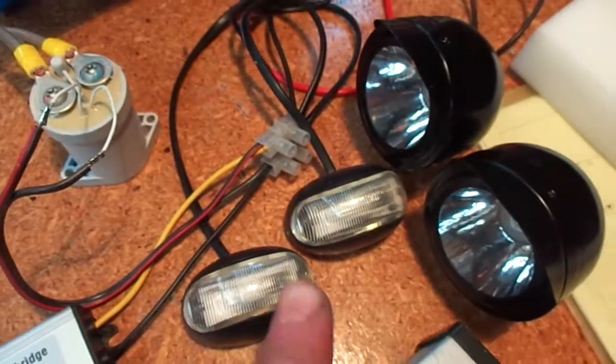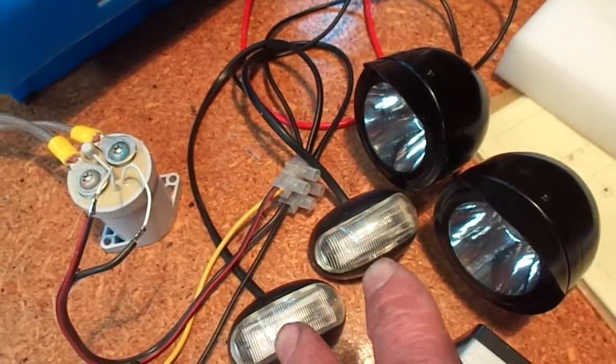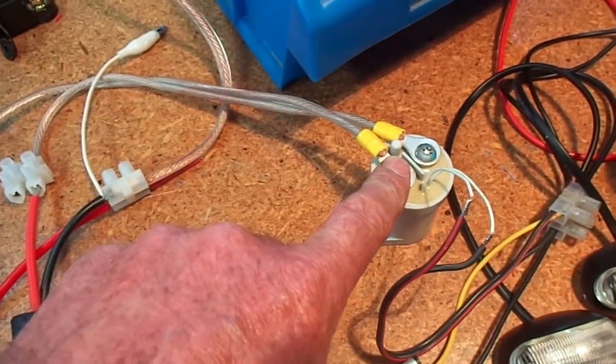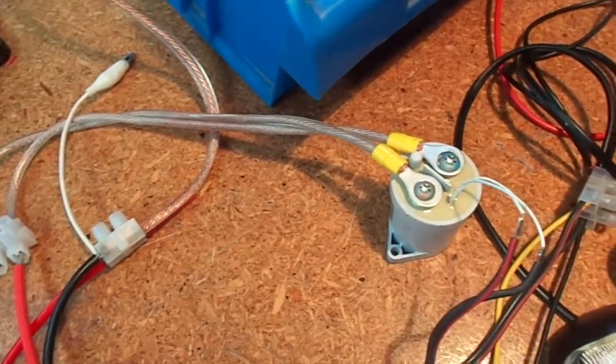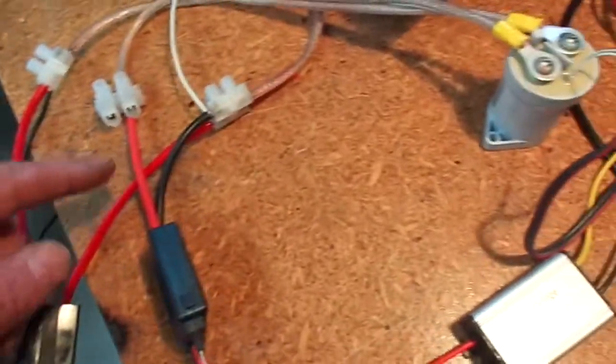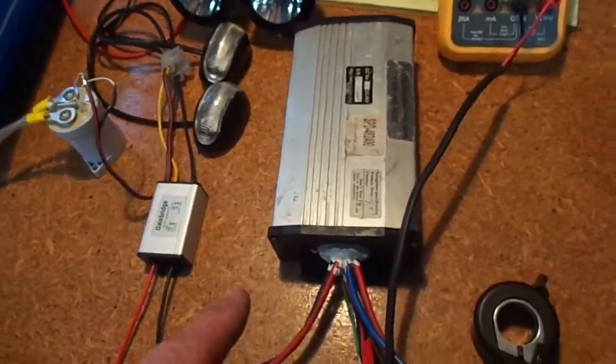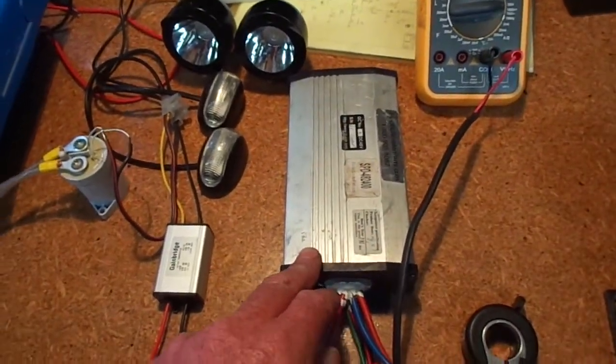That's going to run the headlights and the taillights. It's also going to operate the contactor or solenoid, which will connect power to the controller, which is from an old motor scooter, an electric motor scooter.